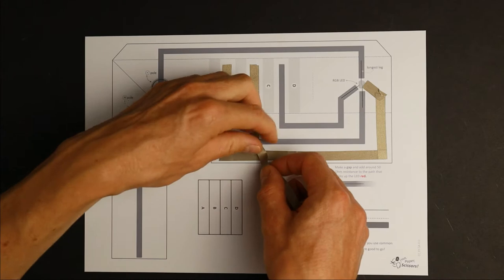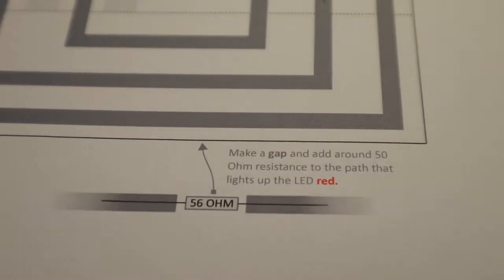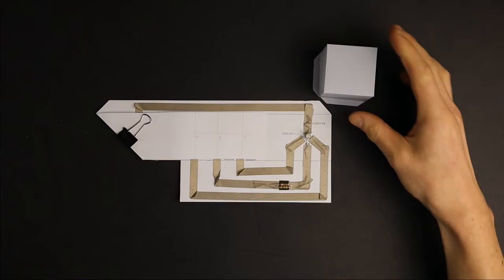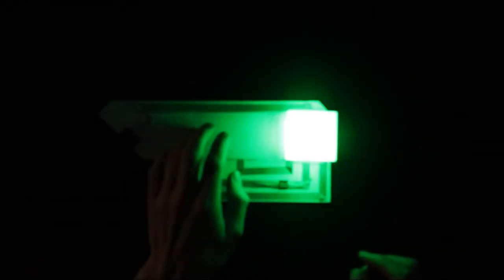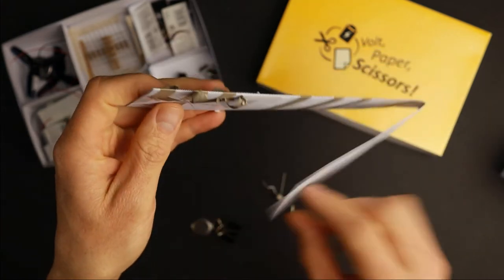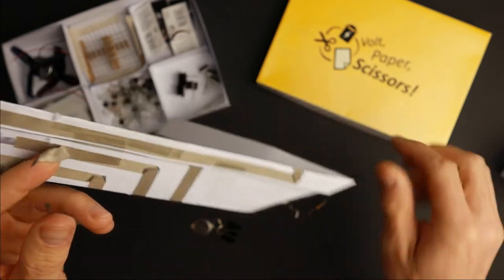By tracing every connection themselves kids learn how the circuit operates and as an educator you have the possibility to include any information you like into the print template. When finished kids can fold and glue the paper circuit together to create a real invention and in the end it is easy to recycle the components and reuse them in other projects. All that's going into the trash is a piece of paper.